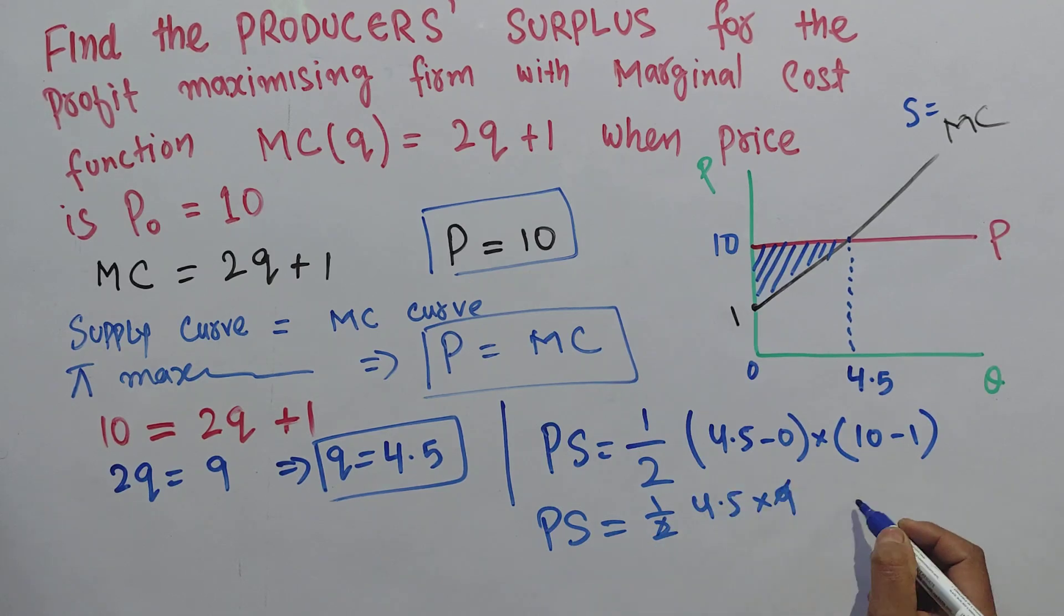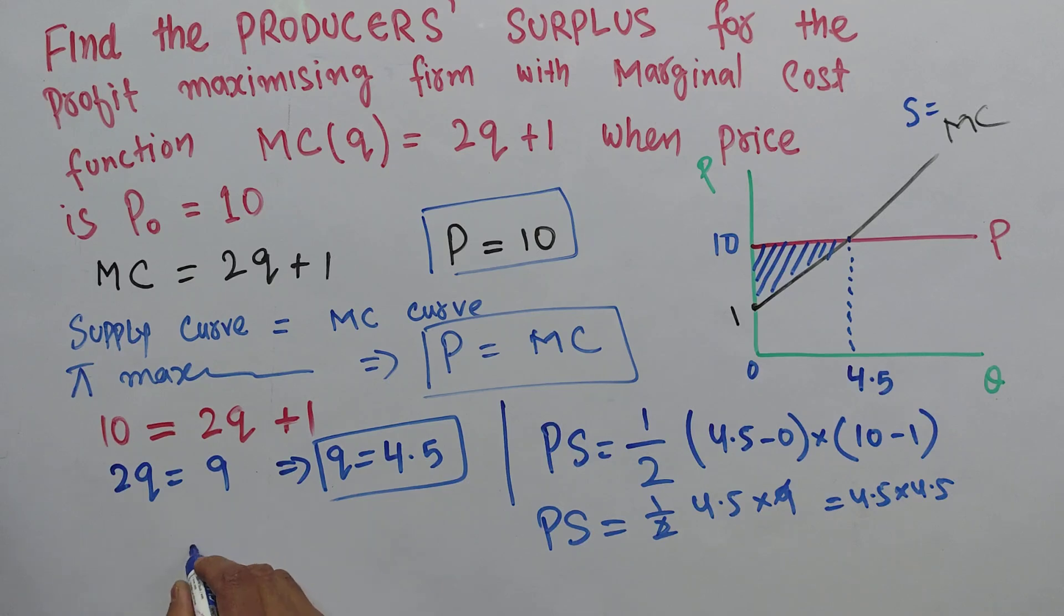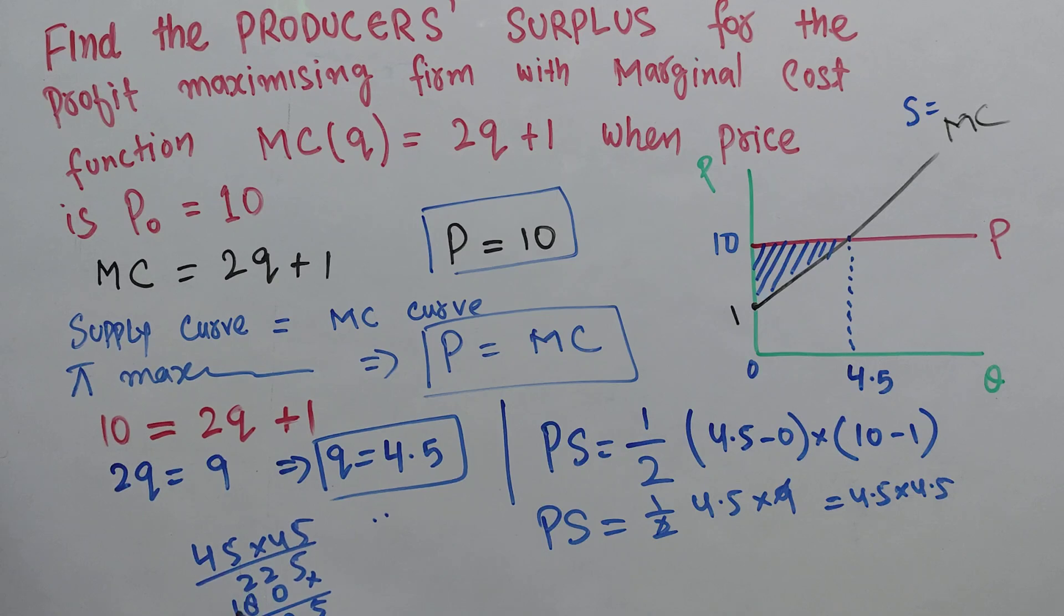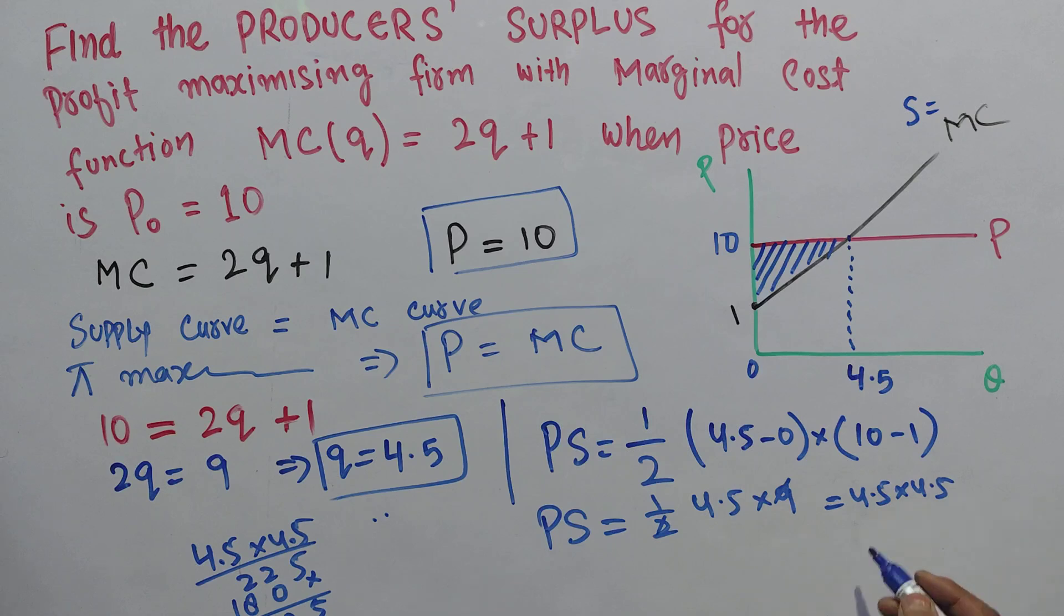We calculate 4.5 times 4.5. Let's compute 45 times 45: five fives are 25, five fours are 20, so 225; four fives are 20, four fours are 16, so 1825. With two digits to the right of the decimal, we get 20.25.